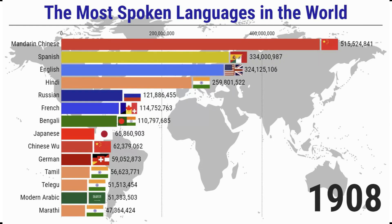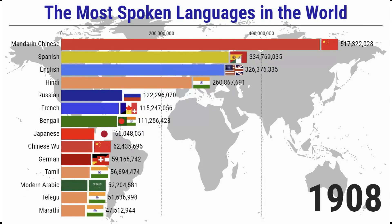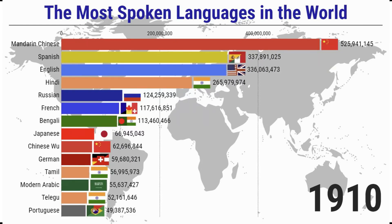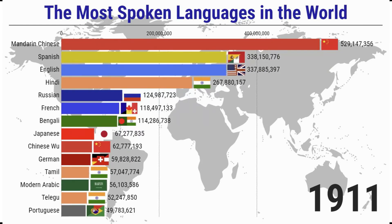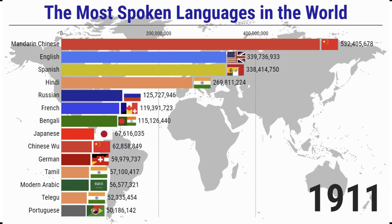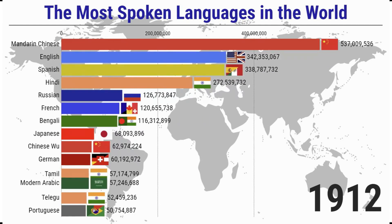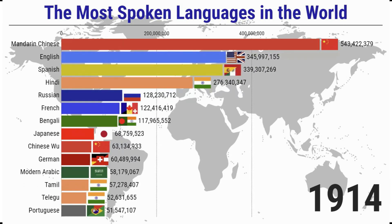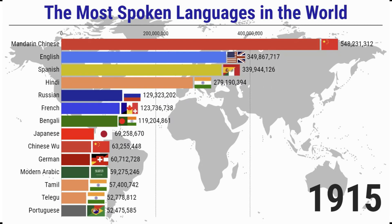Ranking of countries using official languages: there are 75 countries and 27 regions that grant English the status of official language, making it the most commonly used official language. The second ranked language is French, listed as the official language by 29 countries and four regions. Arabic is listed as the official language by 27 countries, ranking third.